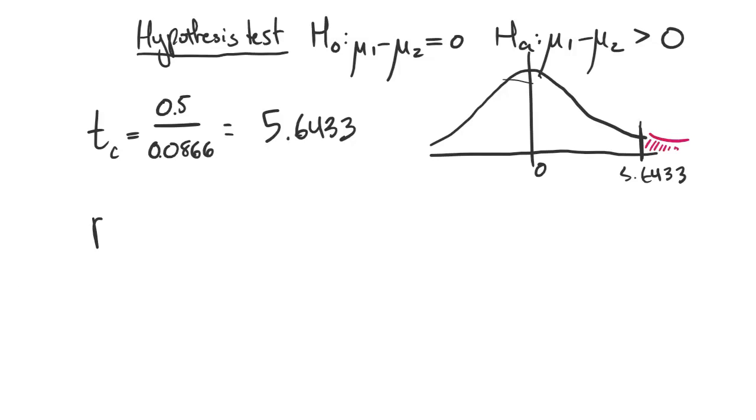Therefore, our p-value is going to be the TCDF from our test statistic 5.6433 up to 9999. And we have to specify that we have 25 degrees of freedom because the smaller n was 26. That gives us a p-value of 0.000036.